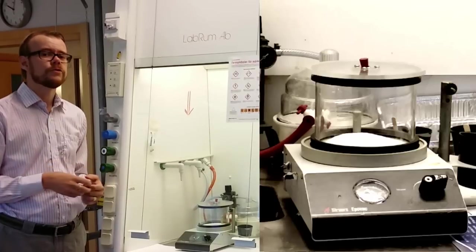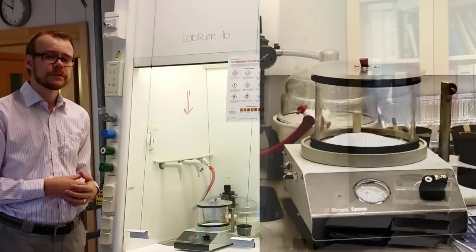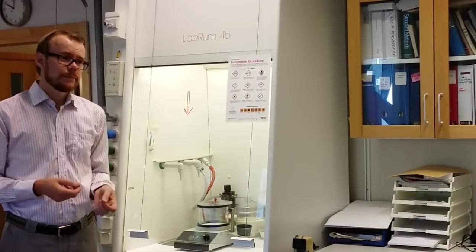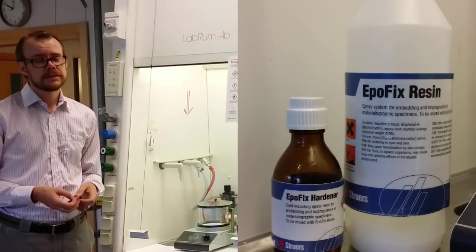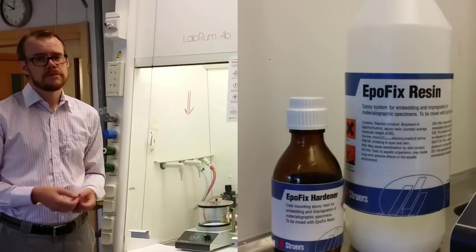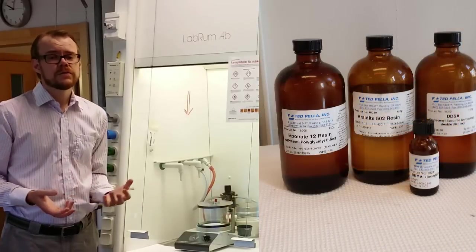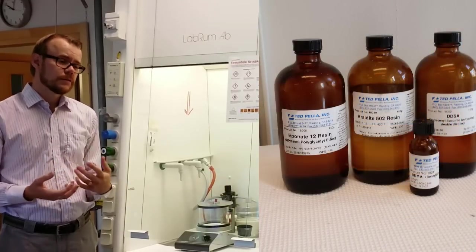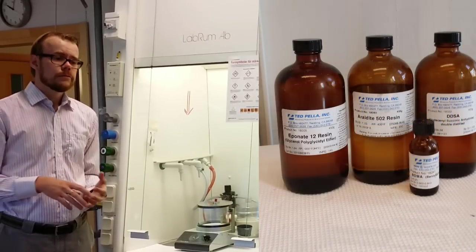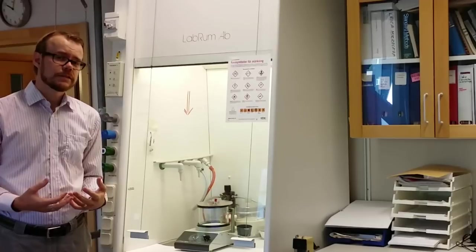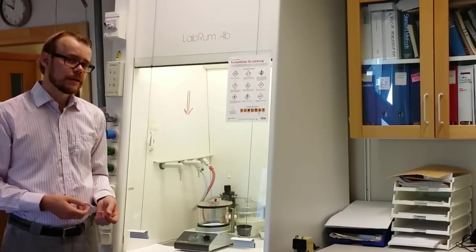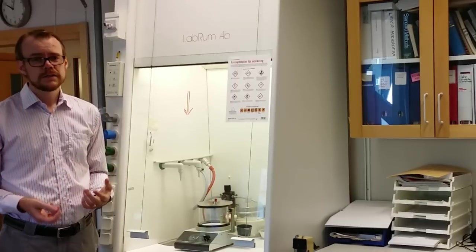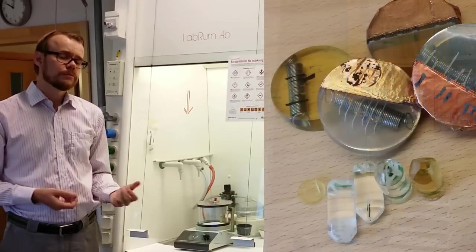That way you get good penetration even if you have a very porous material. When you do plastic embedding, you can have different kinds of plastic compounds. Usually there are two components, but also three and four are common. Why you use different ones is because it depends on what you're going to do later. Some plastics are more resistant to the electrons in the electron microscope when you analyze them. Some plastics are different hardness, so you need to match that with your sample.